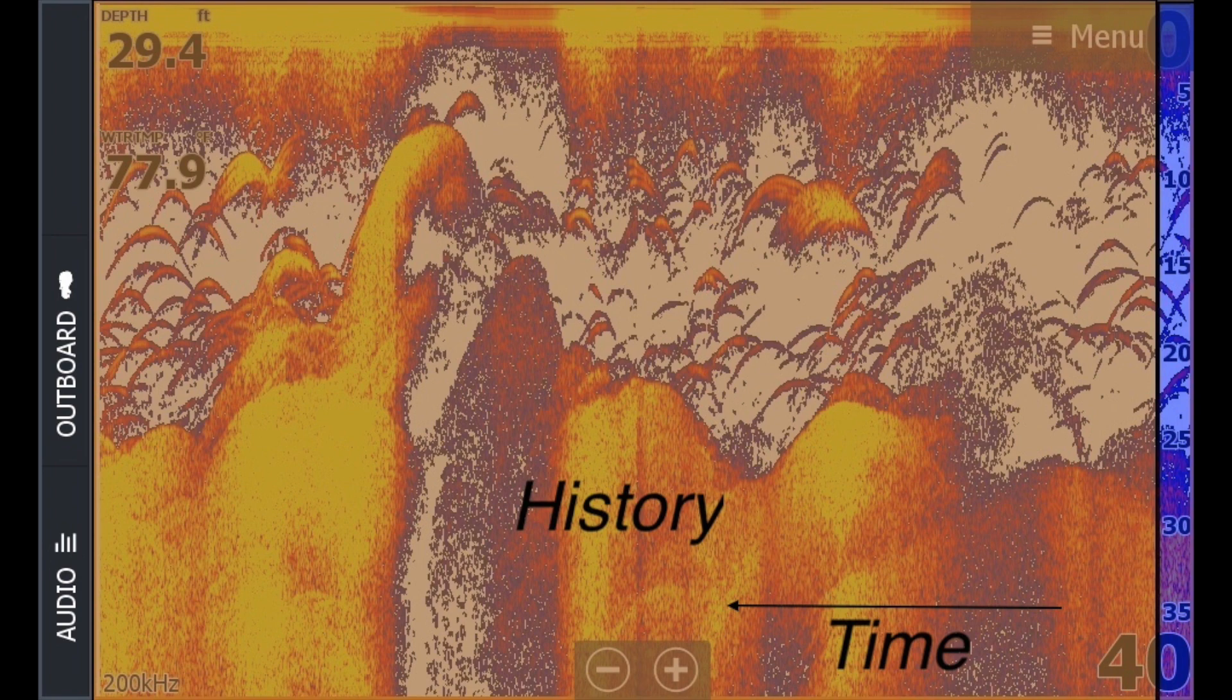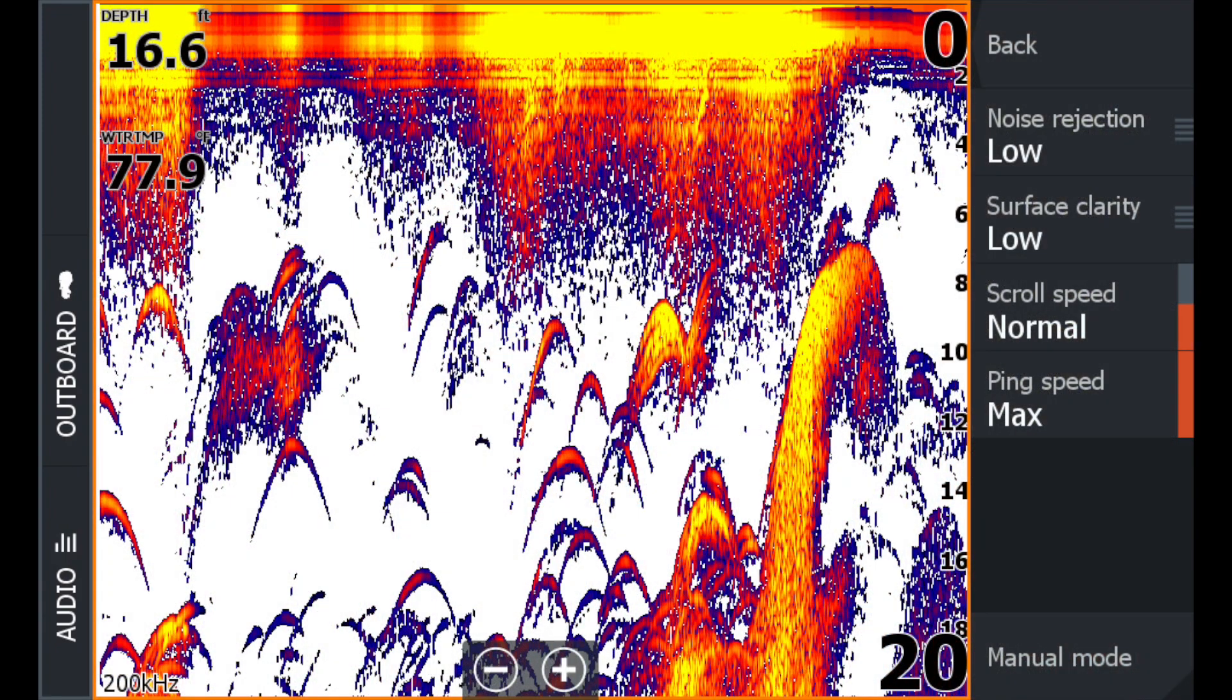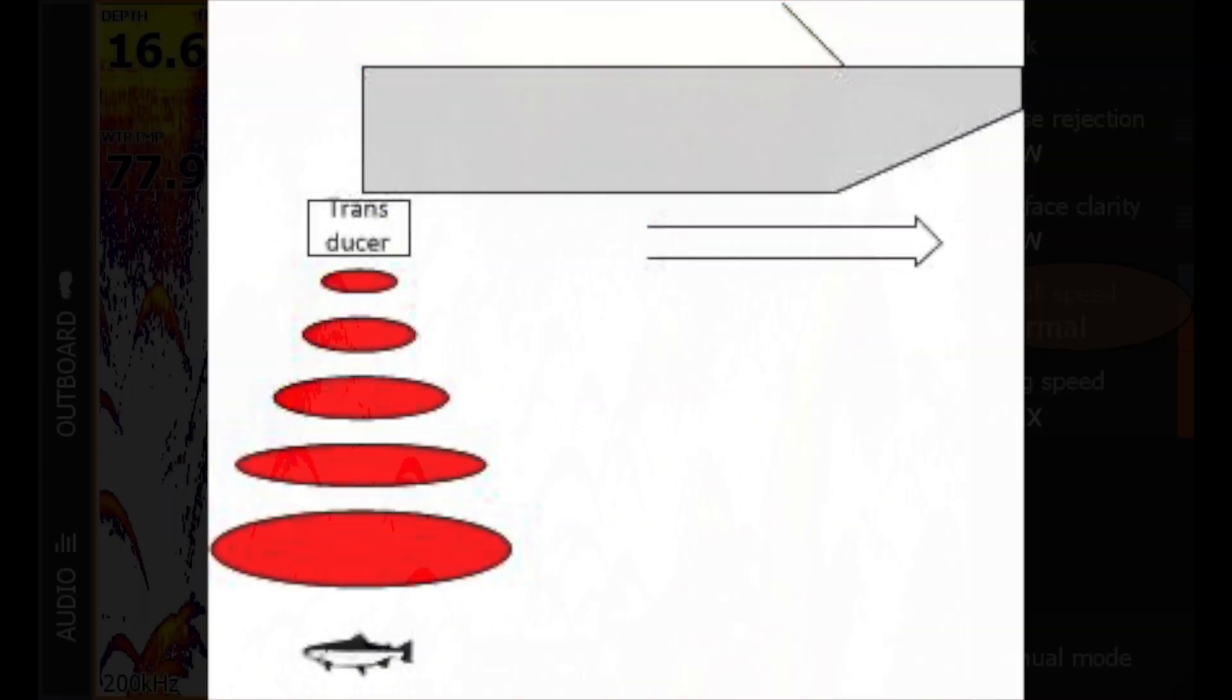Now the big question is how long in the past is that information on the left? Well that's all determined by your scroll speed. Now the faster the scroll speed, less time of history is displayed on the screen. The slower the scroll speed, the longer the history that's displayed. But this is the thing, you have to adjust the scroll speed based on what your speed of travel is.